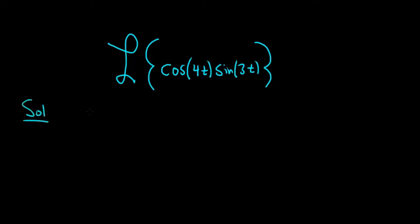This problem relies on knowing a trig identity. Recall that cosine of a times sine of b equals one-half times the quantity sine of a plus b minus sine of a minus b.